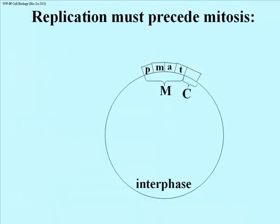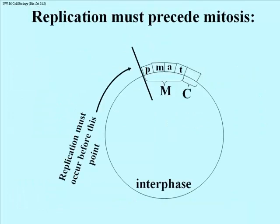Replication must occur at some point in interphase, before the beginning of mitosis, before prophase — before that P-phase of mitosis.